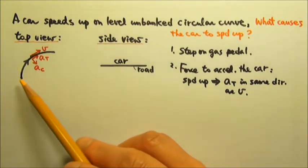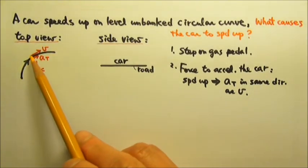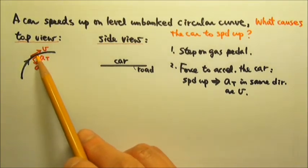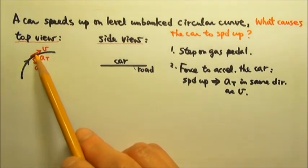If we look at this top view, if the car travels that way, the velocity is tangent to the path, and the tangential acceleration to speed up are in the same direction.